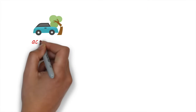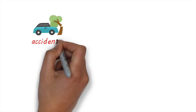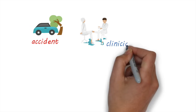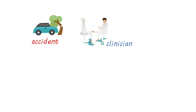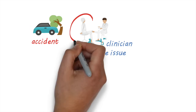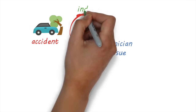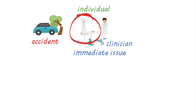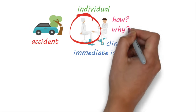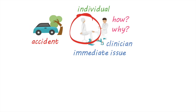Let's say someone has an accident and has a broken leg. A clinician's main focus is the immediate health problem — fixing the fractured leg. Clinicians focus on the individual. The public health approach would be holistic and would focus on figuring out how and why this person had an accident so that actions can be taken to prevent it from happening again.